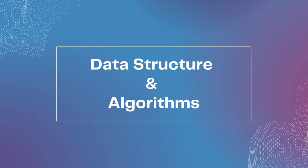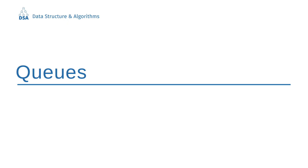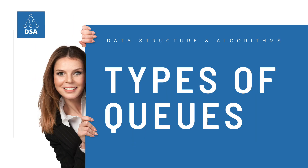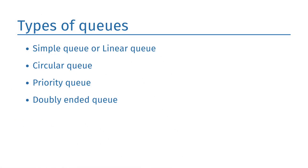Hello, welcome to the Data Structures and Algorithms online tutorial video. In the last video we learned about queues and their operations, and in this video we will discuss the types of queues in detail. There are four types of queues: simple queue or linear queue, circular queue, priority queue, and doubly ended queue. We will learn each one of them in detail.